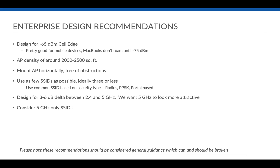An important point: design for a 3 to 6 dB delta between 2.4 and 5 GHz. We want 5 GHz to look more attractive to users. Since 2.4 GHz has a lot of limitations, when configuring radio settings, reduce the transmit power of 2.4 GHz slightly and increase the power of 5 GHz so that 5 GHz looks more attractive to clients.